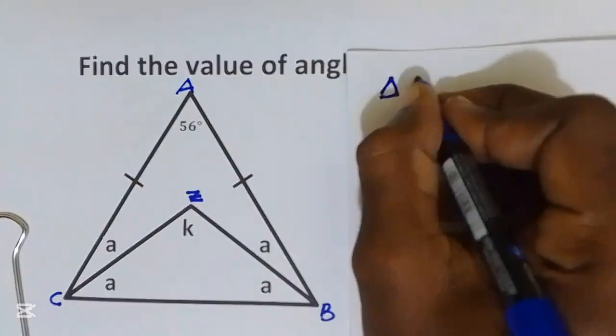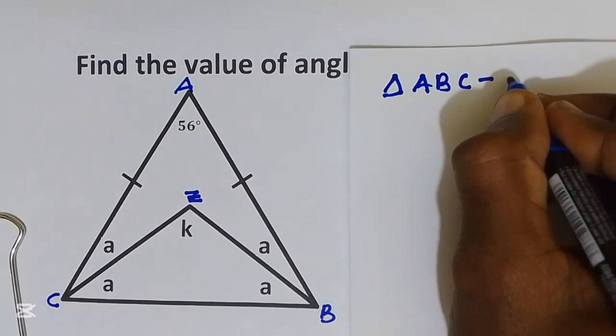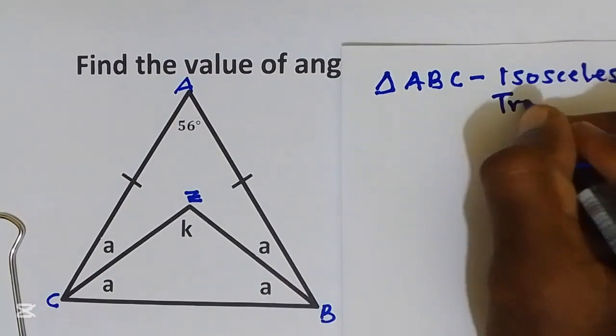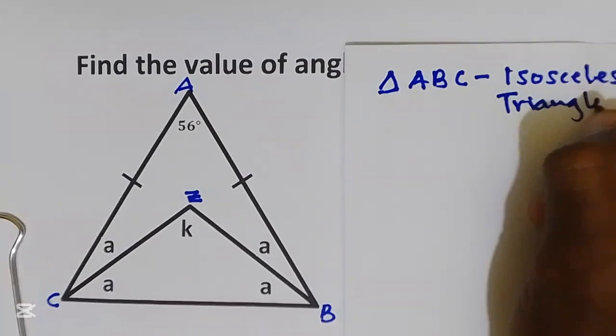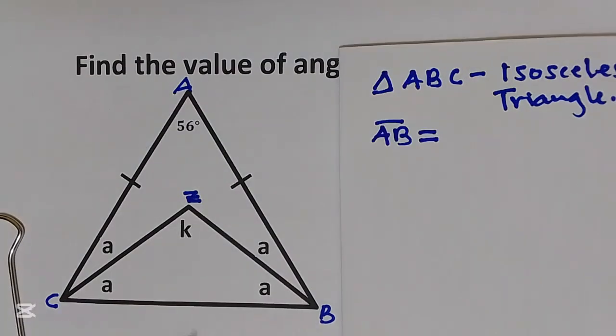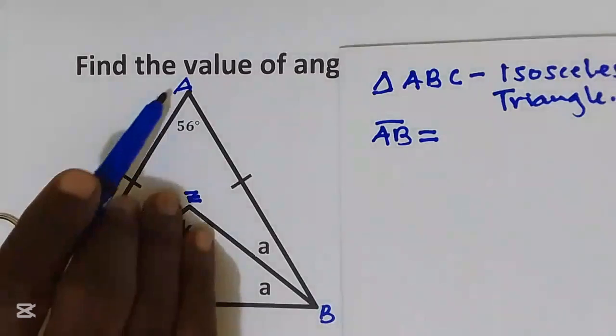Triangle ABC is isosceles triangle. That means we have two angles equal and two sides are equal. Distance AB is equal to distance AC.